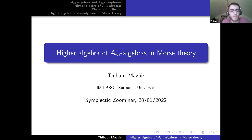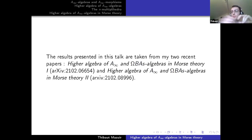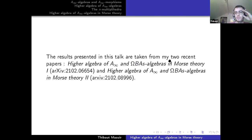Thanks for the invitation, and thanks to all of you listening to me today. I'll tell you about the higher algebra of A∞ algebras in Morse theory. All the results I will present today are taken from two papers on the archive, entitled 'Higher Algebra of A-infinity and Omega-B-S Algebras in Morse Theory 1 and 2.' I'll emphasize the higher algebra of A-infinity part and finish with some words on the Morse theoretic applications.